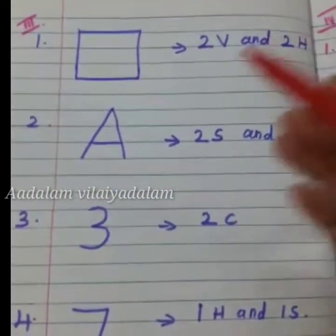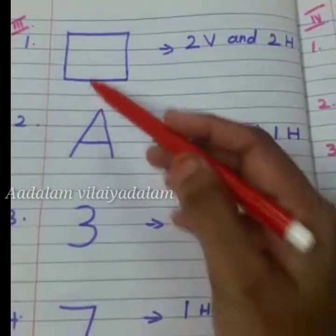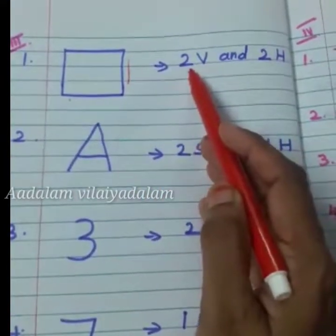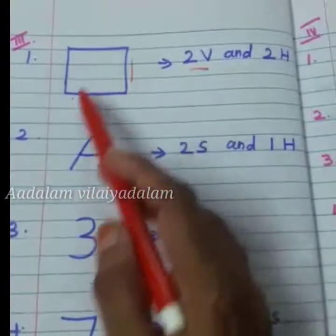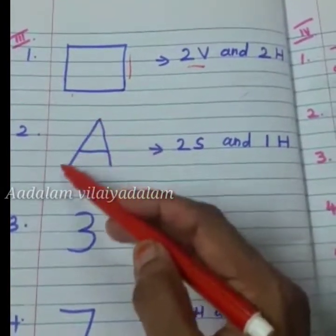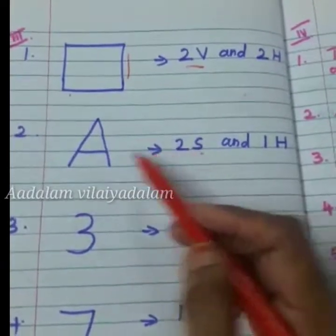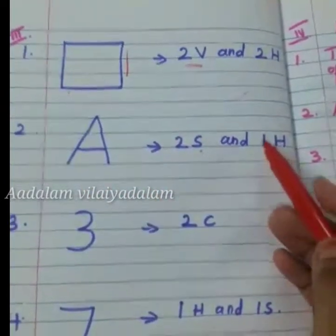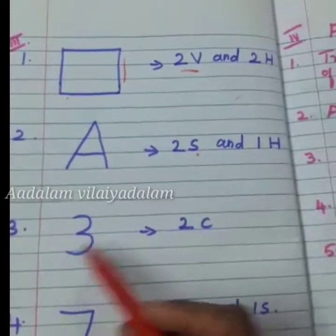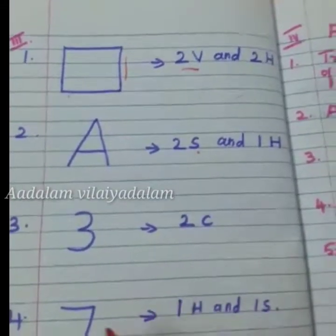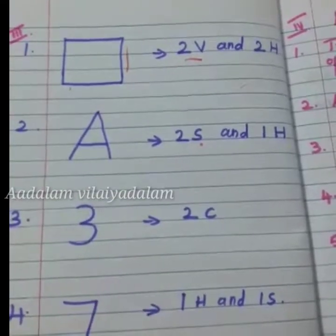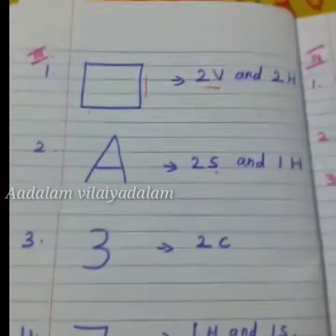Now tell me, what are the lines here? These are two vertical lines. Here are two horizontal lines. And this is two slanting lines and one horizontal line. And this is two curved lines. Here is one slanting line and one horizontal line.